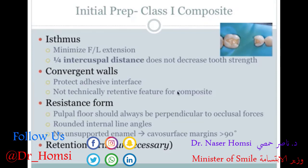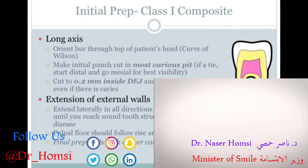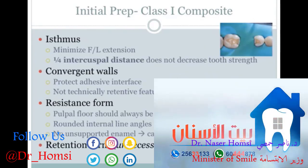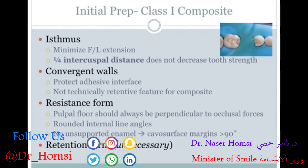Convergent walls are more theoretical than anything, but they protect the adhesive interface. They're not technically retentive for composite because it is being bonded to tooth structure — this becomes a bigger player with amalgam. Resistance form refers to the pulpal floor being perpendicular to occlusal forces, so the floor isn't jagged or sloped — it's perpendicular to the biting forces from the opposing arch so it can resist those forces. Rounded internal line angles are also essential because any sharp internal line angle will concentrate stress and risk fracture.